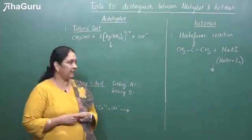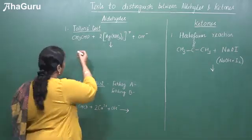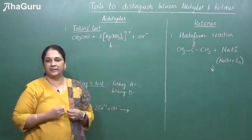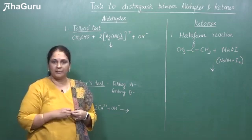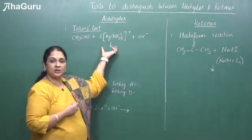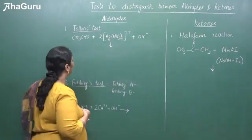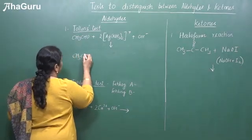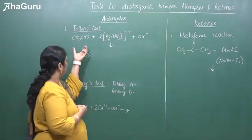First let us see the aldehyde. The first test is called Tollen's test where we use Tollen's reagent. We take an aldehyde — I have taken acetaldehyde — then we treat it with ammoniacal silver nitrate solution. We take silver nitrate solution and ammonia, add it in water to form ammonium hydroxide, mix those two, and we get ammoniacal silver nitrate solution — this is the Tollen's reagent. Then you add a base to make it alkaline, and the aldehyde will get oxidized to CH₃COO⁻. Tollen's reagent is a mild oxidizing agent, converting the aldehyde to acid.